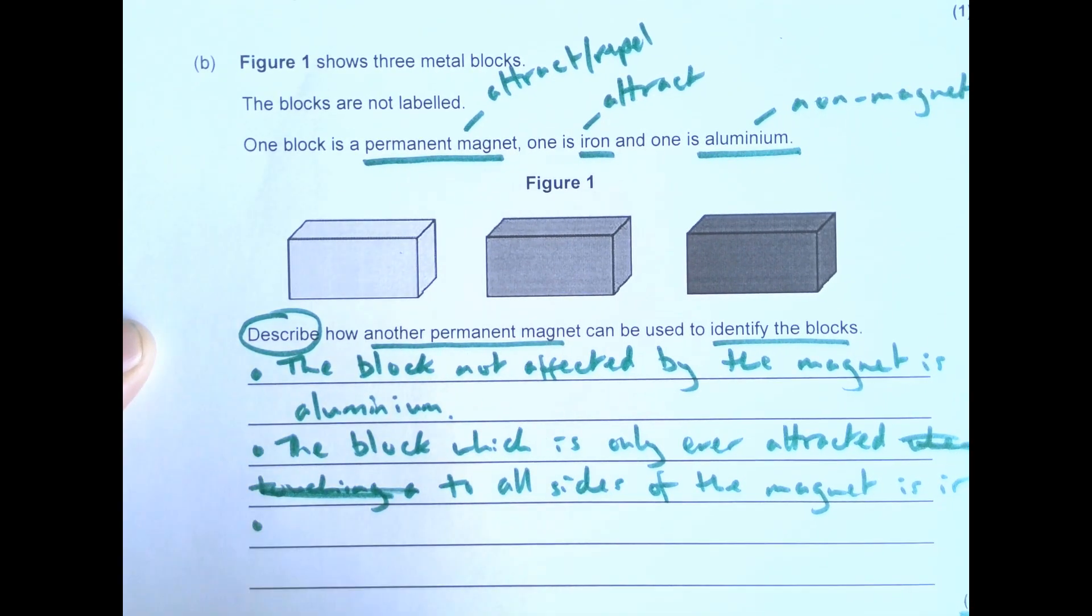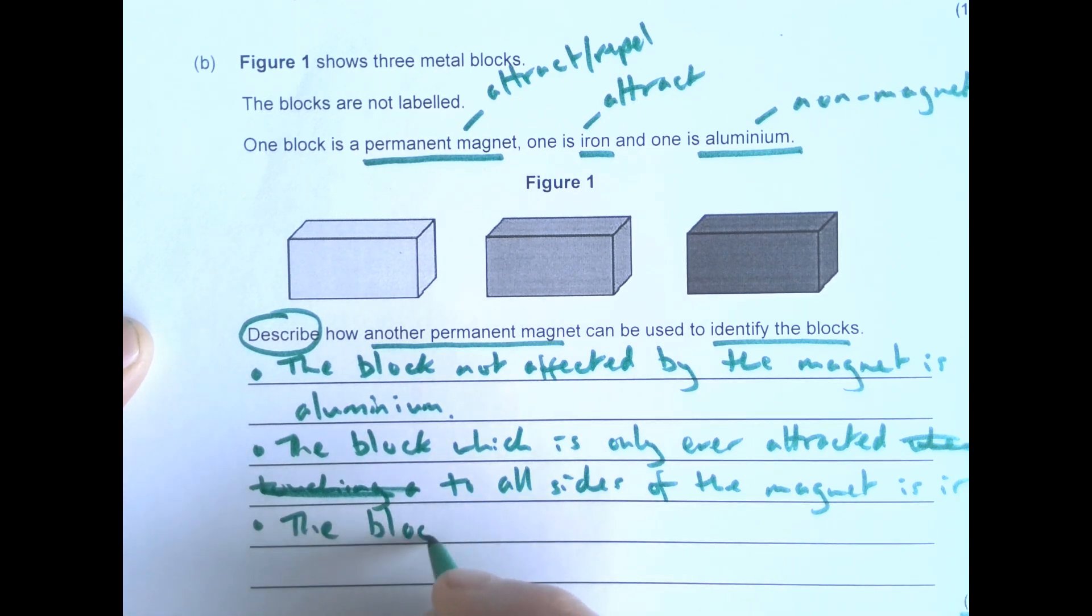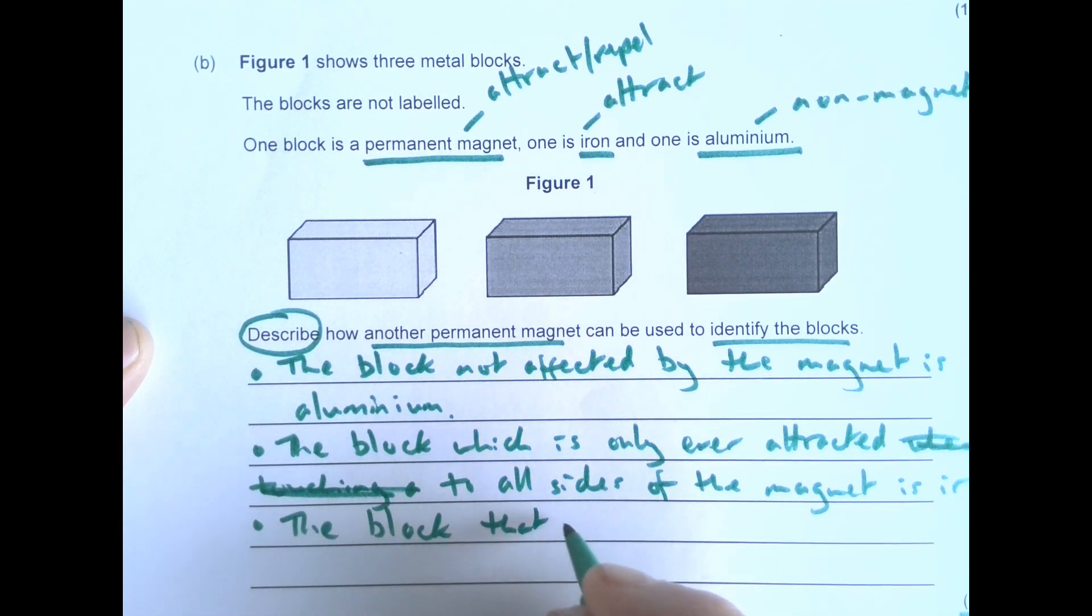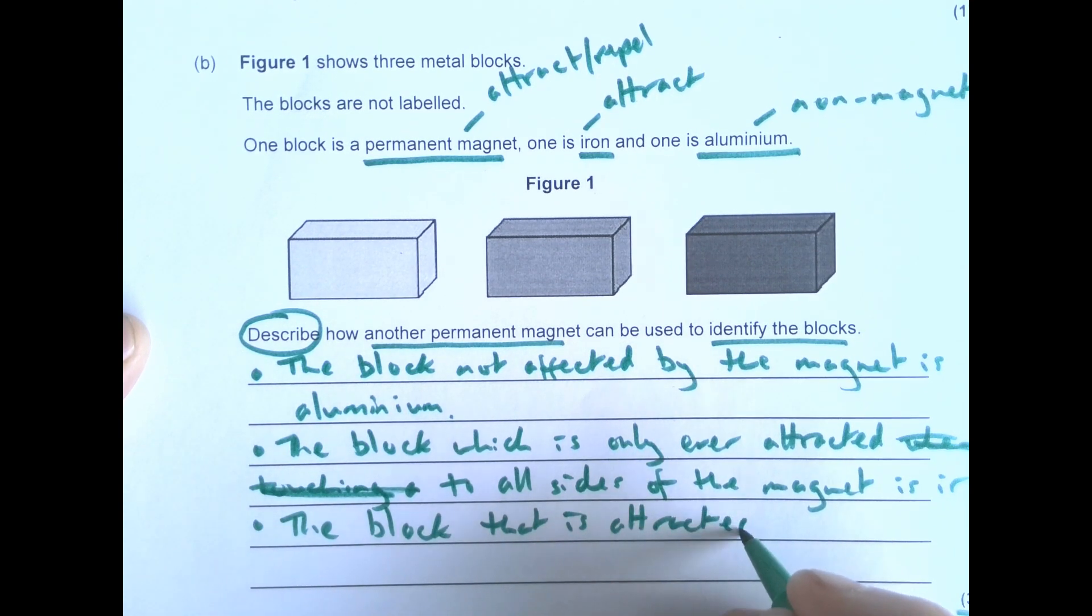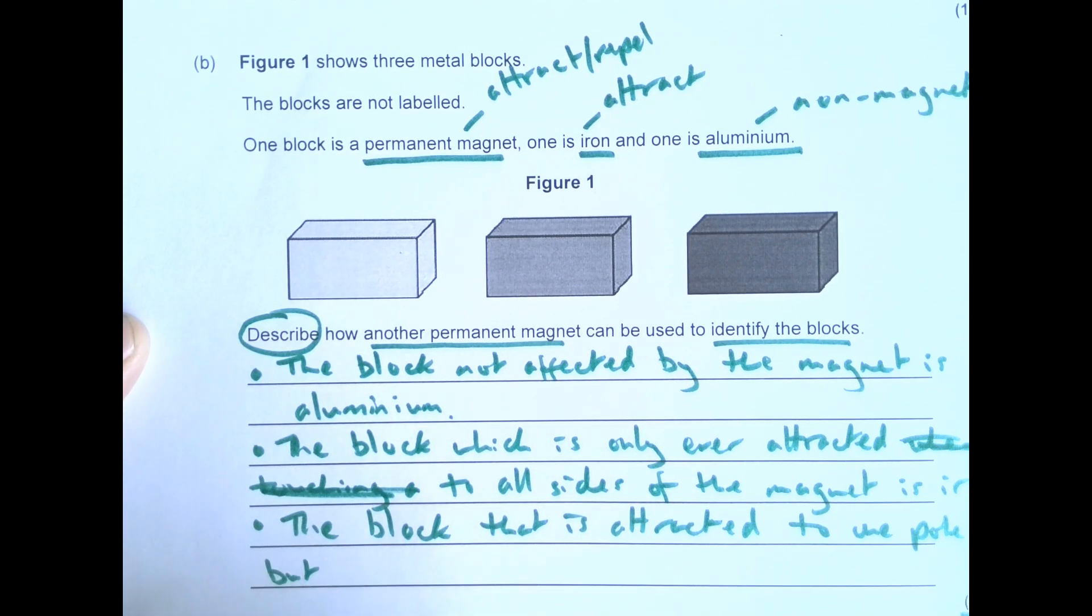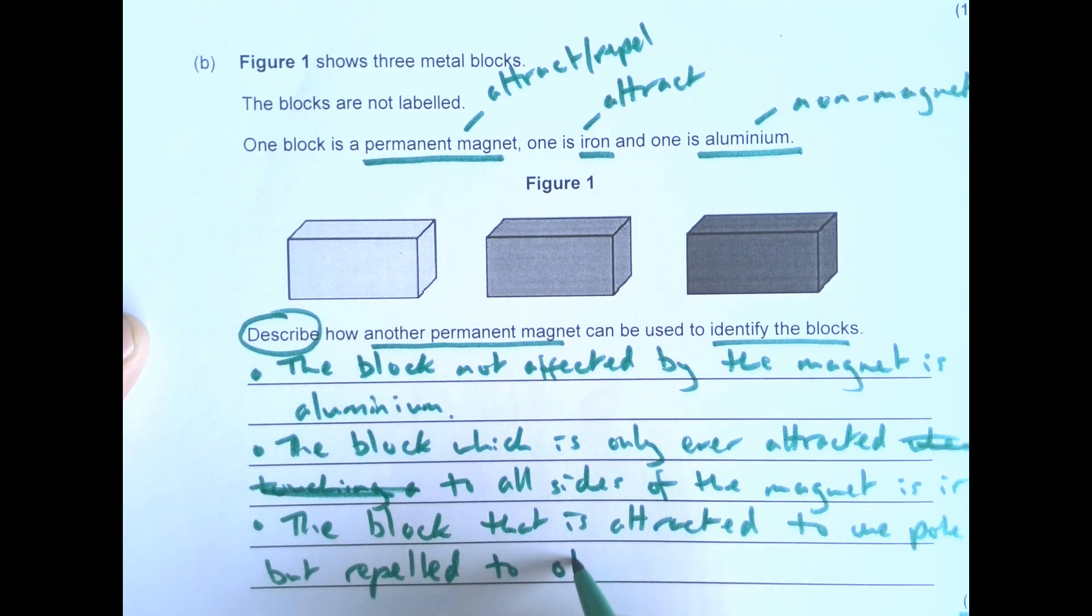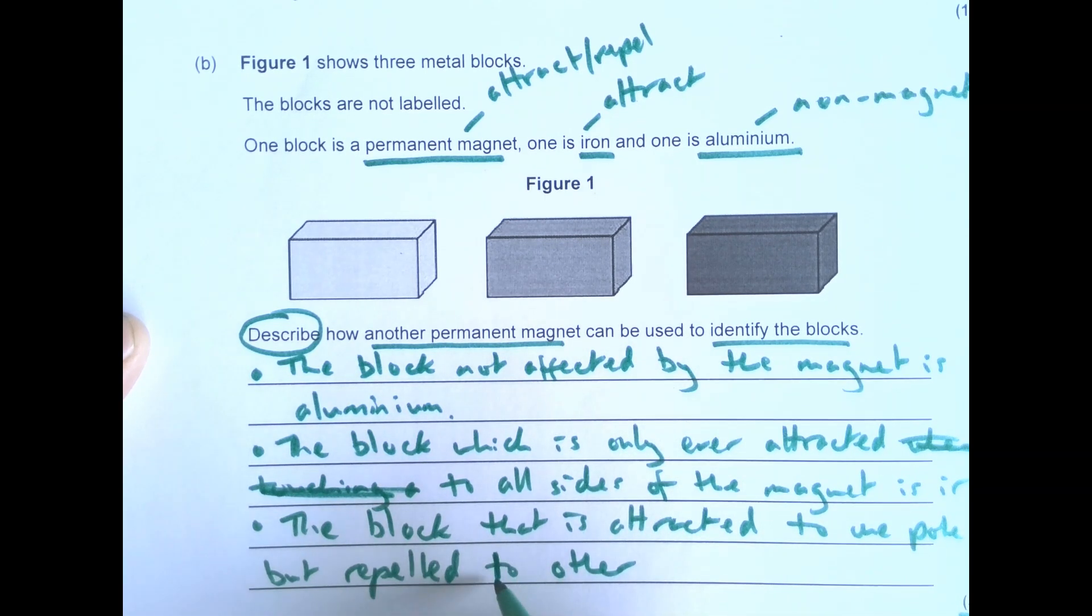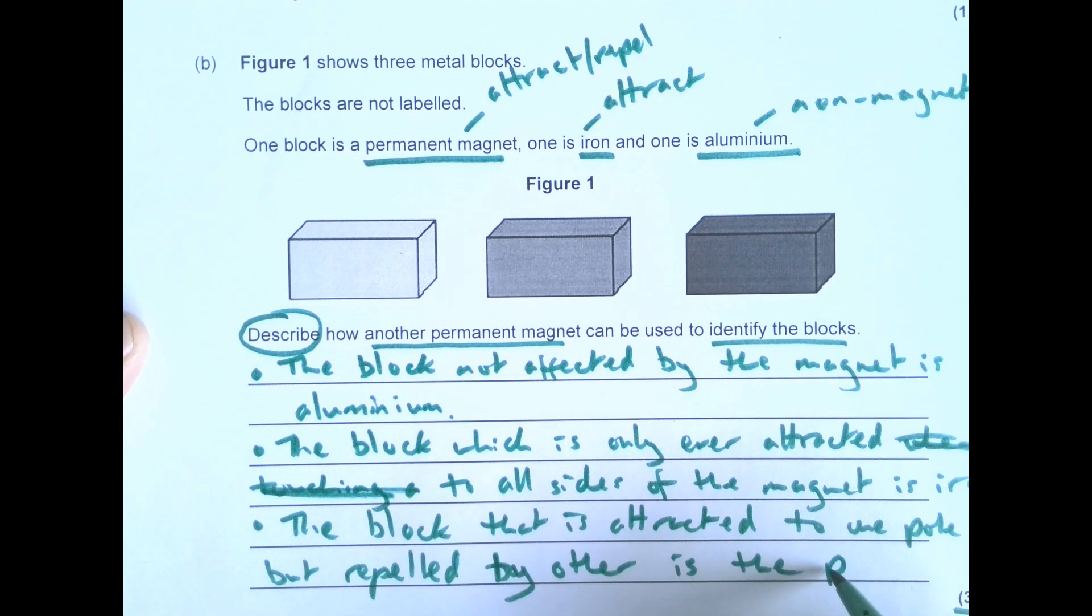Okay, and the last one we've got is the block that is attracted to one pole but repelled by the other. Is the permanent magnet.